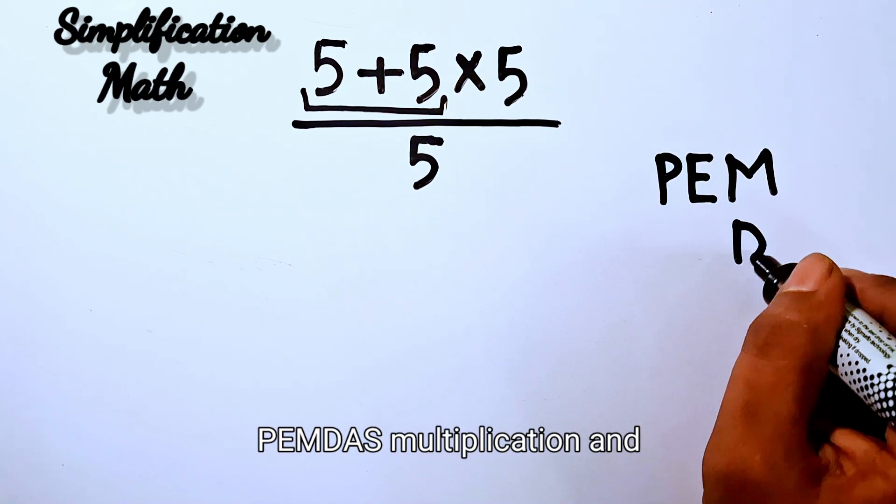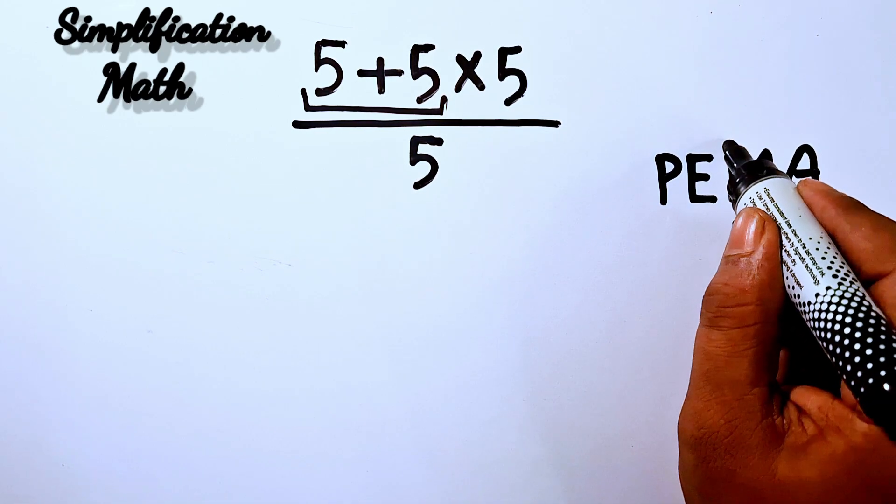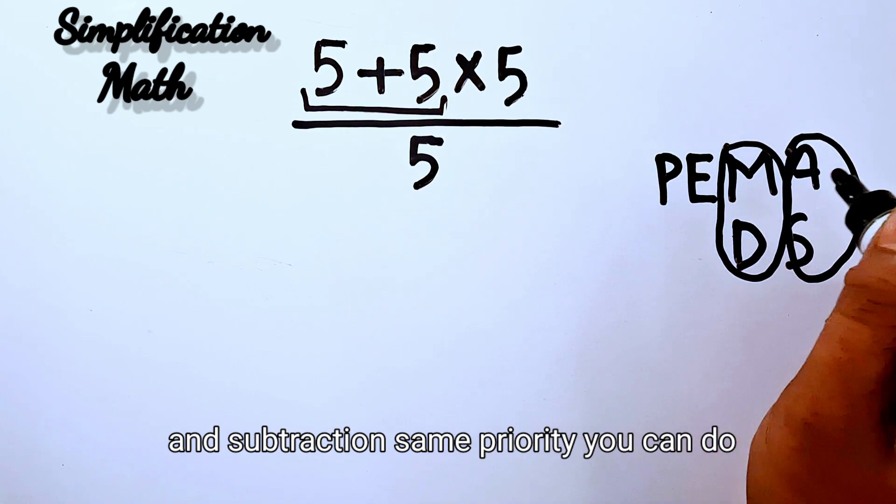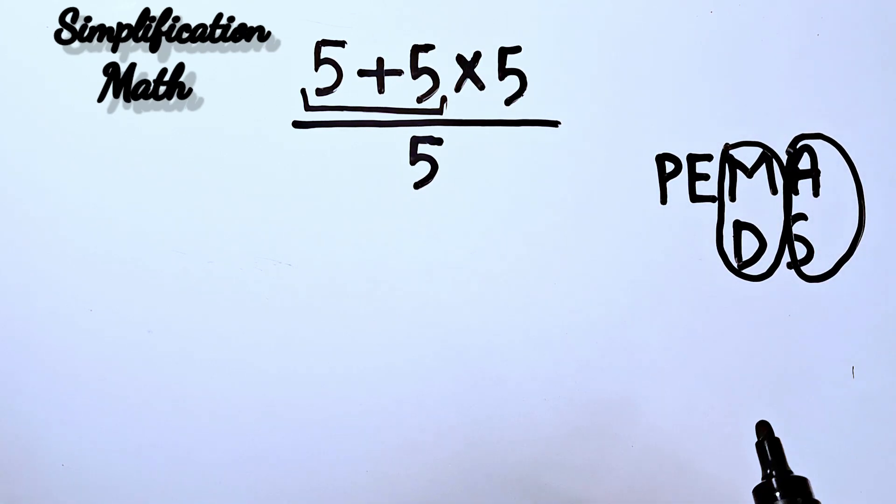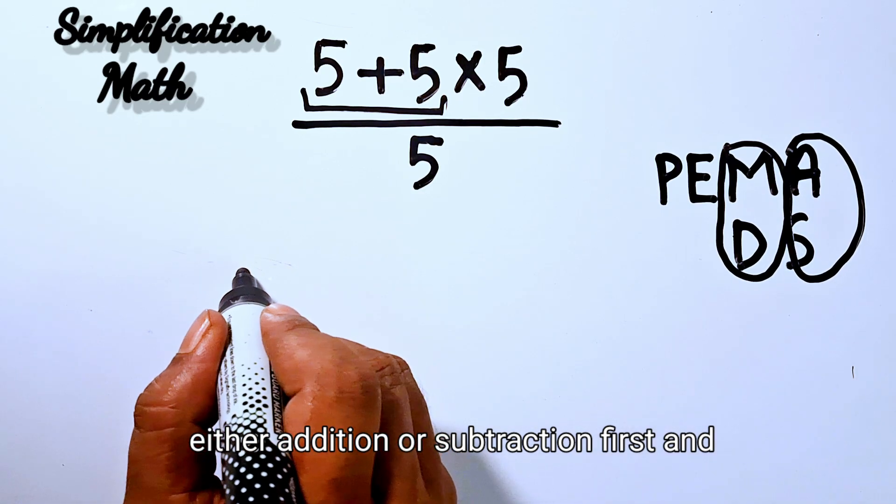In PEMDAS, multiplication and division have the same priority, and addition and subtraction have the same priority. You can do either addition or subtraction first.